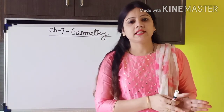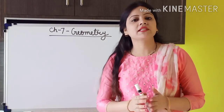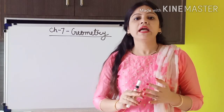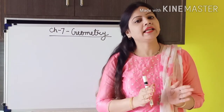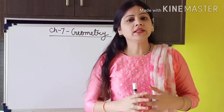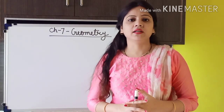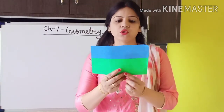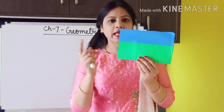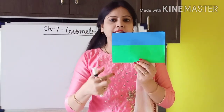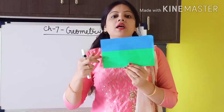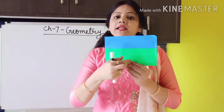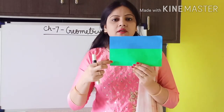Till the last video, we already discussed about the plane figures, solid figures, and the point, line, and line segment. One thing I want to make clear here: while teaching about the 2D shapes, I told you that 2D shapes have two dimensions — length and height. This is not height. In the fluency of speaking, I said length and height; it should be length and width.